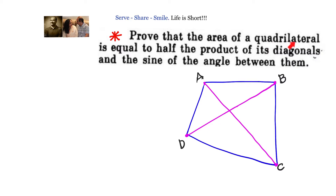Prove that the area of a quadrilateral ABCD is equal to half the product of its diagonals — half into AC into BD — and the sine of the angle between them. Let us say this angle is equal to theta.